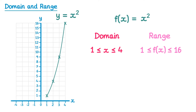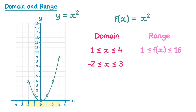Let's try a different domain. Now let's restrict it from negative 2 to 3, so we're interested in x values from negative 2 to 3, and we only want this part of the graph. Looking at the corresponding y values, you can see they go from 0 up to 9. So the range for this corresponding domain is f of x in between 0 and 9.